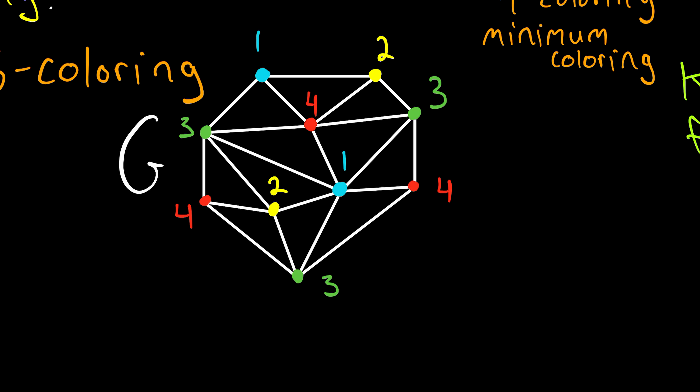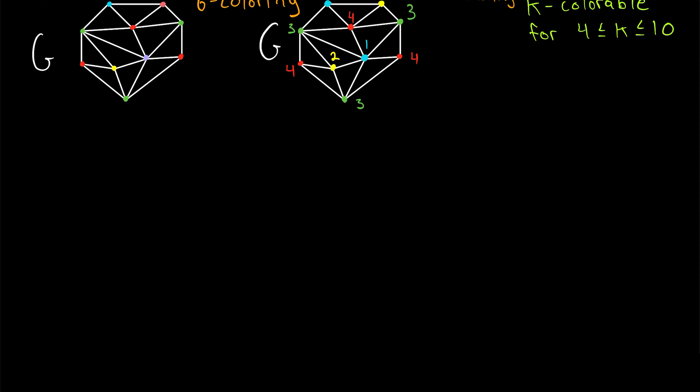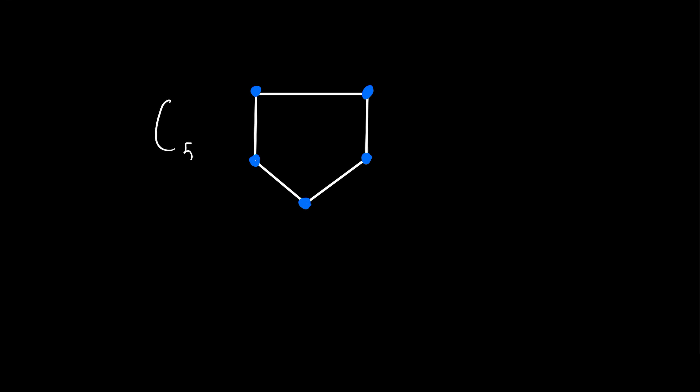Talking about assigning labels to a set of vertices might make you start to think about functions. We'll talk about colorings as functions in a future lesson, but I encourage you to think more about the topic and let me know what you think down in the comments. So with that said, let's take a look at one more small example for the road. Suppose we wanted to color the vertices of this five-cycle, C5.